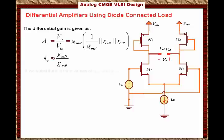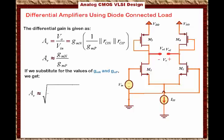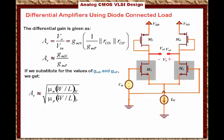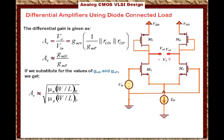Substituting the values of GMn and GMp, the gain is approximately equal to (μn × W/Ln) over (μp × W/Lp). This is elegant because all you have to do is adjust the W/L ratio of the bottom transistors and the W/L ratio of the top transistors to achieve the desired gain. M1 is identical to M2, and M3 is identical to M4 — by adjusting these W/L ratios, you control the gain. This is why CMOS technology is very useful: controlling geometric structure controls gain.